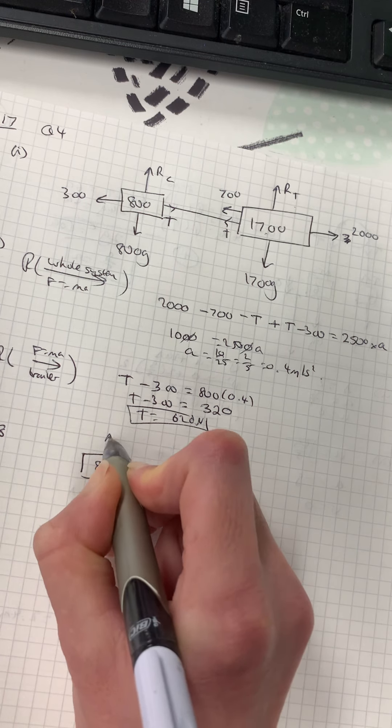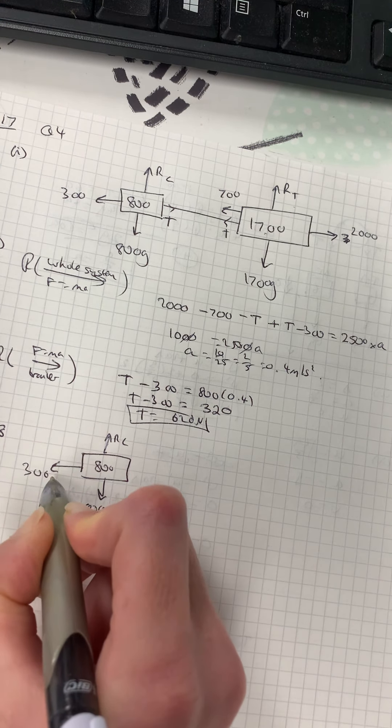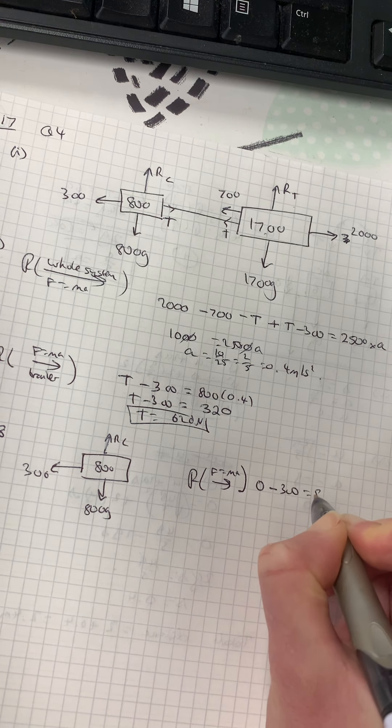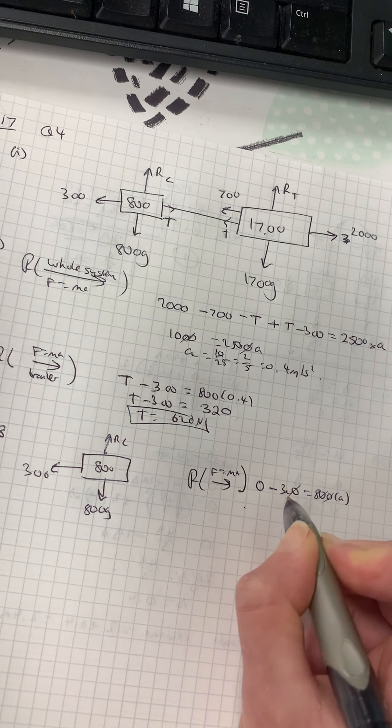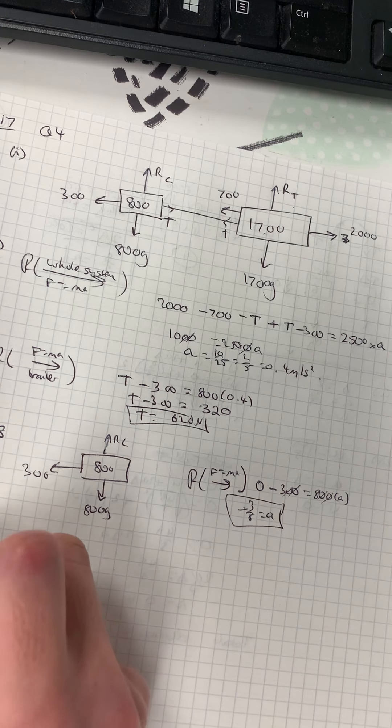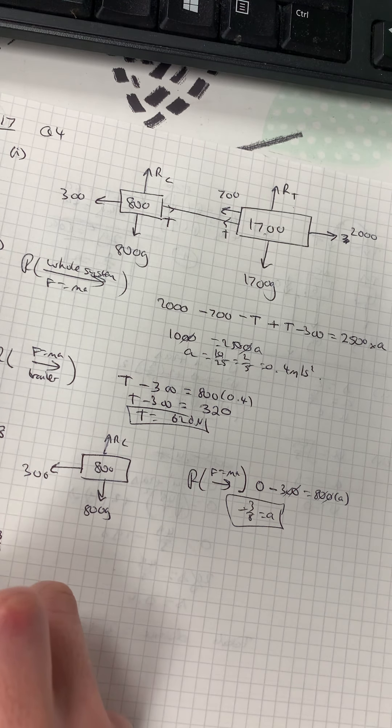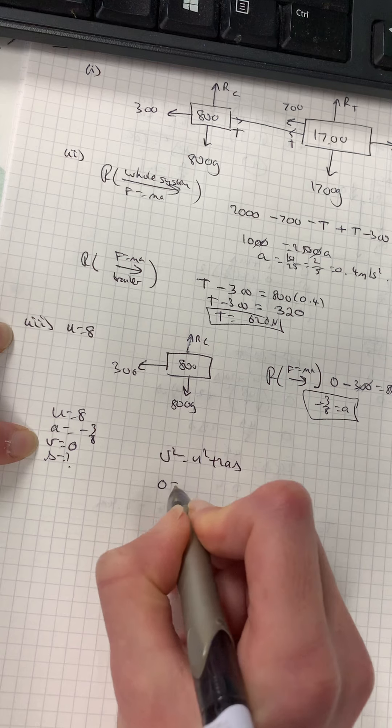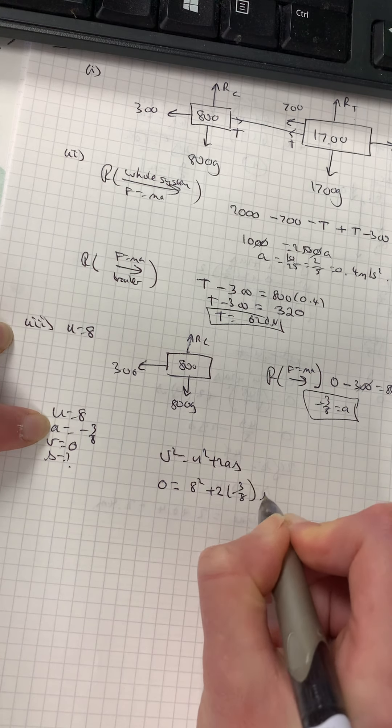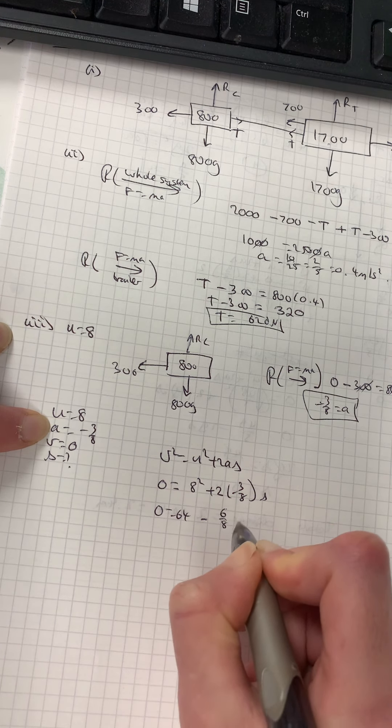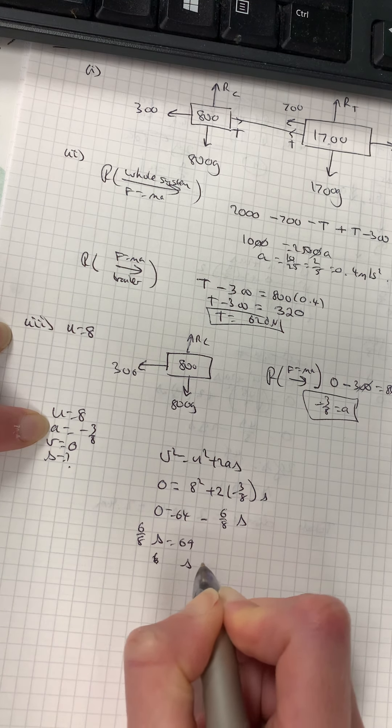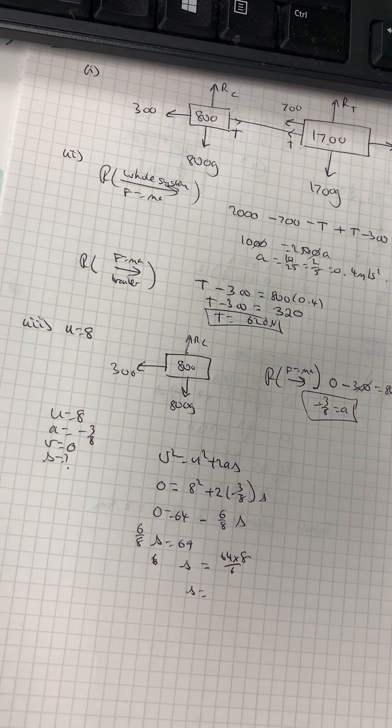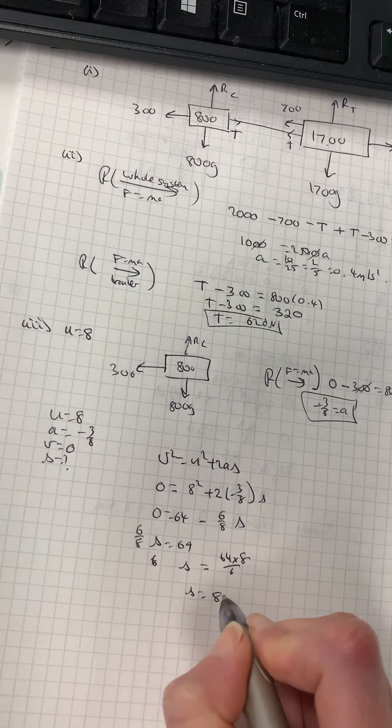So let's draw out a new system here. So 800, 800G, reaction of the car. And this one stayed the same at 300. Now, if I resolve it forward using F equals MA, nothing's pulling it forward. 300 is pulling it back equals 800A. So I can work out my A there. So minus 3 eighths is my A. And I've been told my U. So U is 8, A is minus 3 eighths. I want to know when it comes to a stop and the distance. So using V squared equals U squared plus 2AS. V squared is 0, U squared is 64, minus 6 over 8S. So 6 over 8S is 64. So S is 64 times 8 divided by 6. I need a calculator just to check that one. So 64 times 8 divided by 6 gives me a distance of 85 and a third meters.